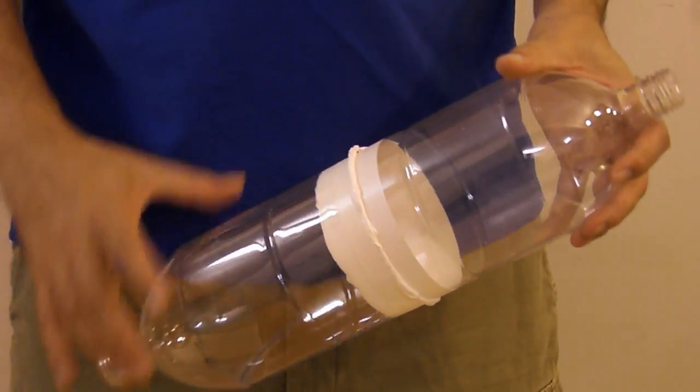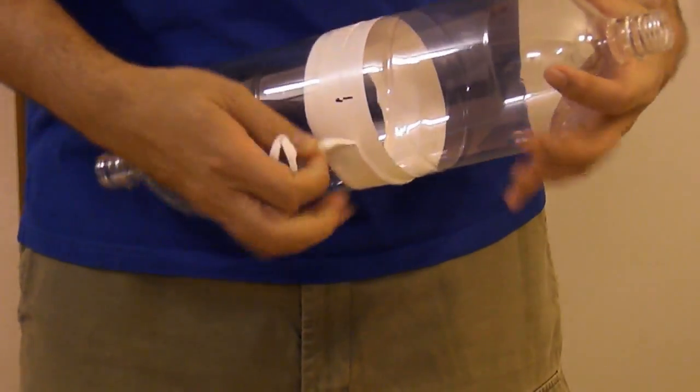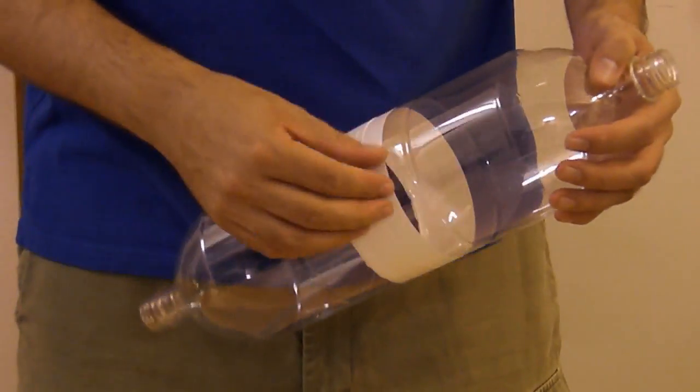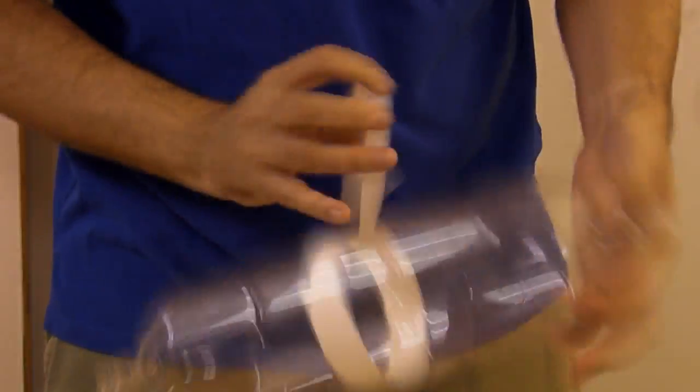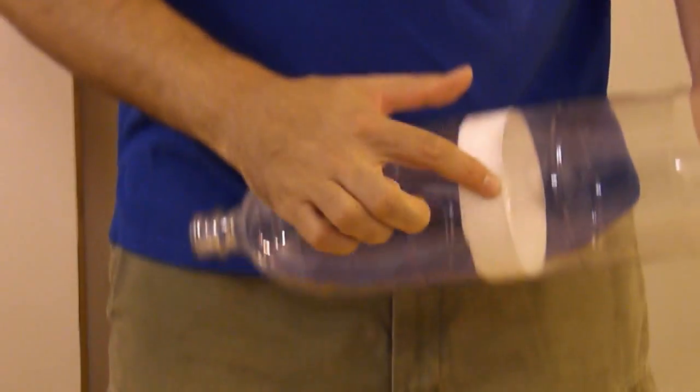Once the glue cures, you can just peel off the excess. It comes off very easily. And then remove the tape. Save the tape because you'll need it in a minute. And you should end up with a nice clean edge.